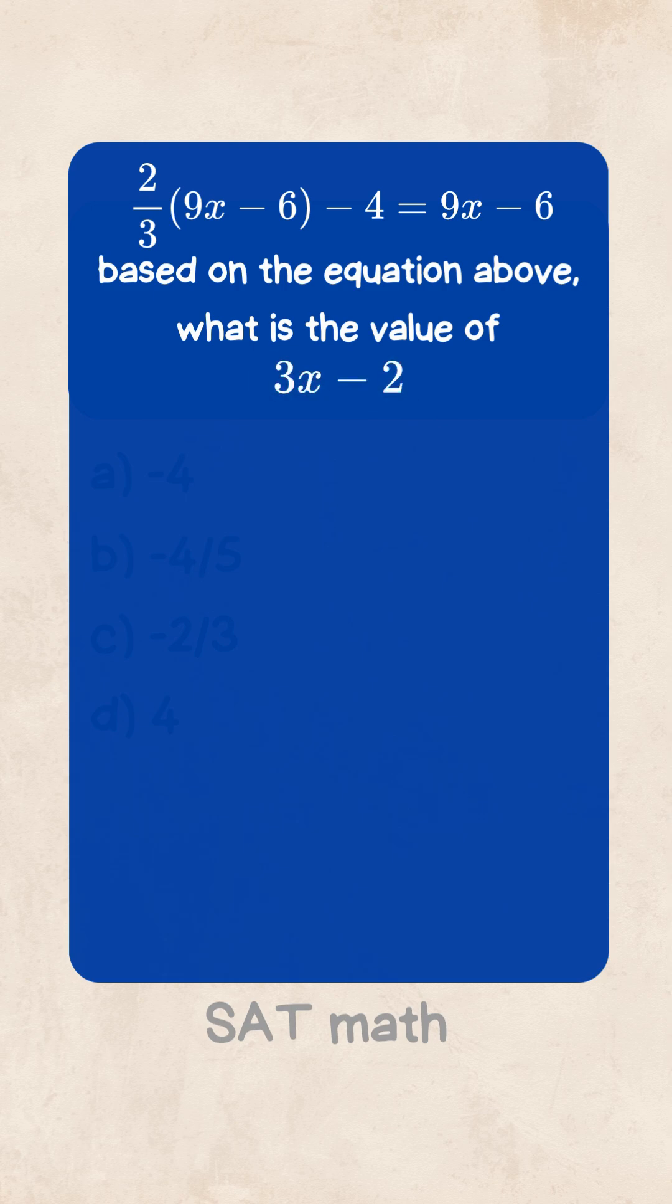Spot the pattern. Both sides contain 9x - 6. Wait a minute. 9x - 6 is 3 times what the problem really cares about: (3x - 2).